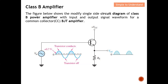The figure below shows the modified single-side circuit diagram of a Class B power amplifier with input and output signal waveforms for a common collector (CC) BJT amplifier. As explained, this amplifier takes care of either the positive or negative half cycle — in this case the positive half cycle appears at the output. The other transistor handles the negative half cycle. Note the 0.7V threshold voltage required to energize the transistor, which creates a small gap.